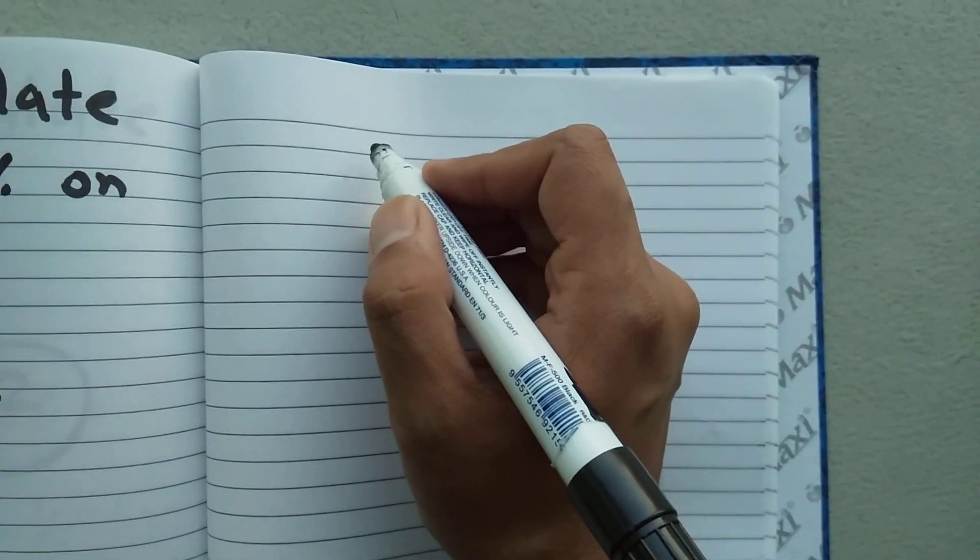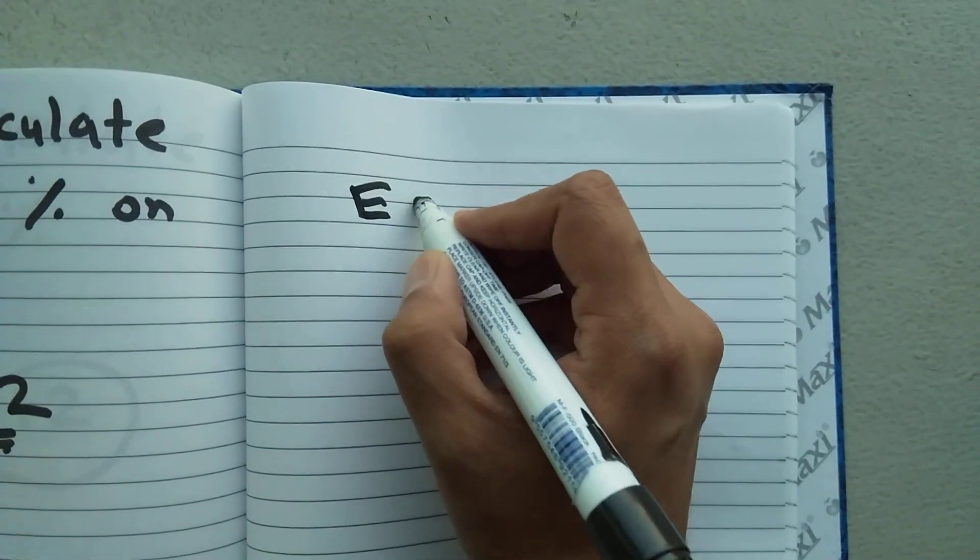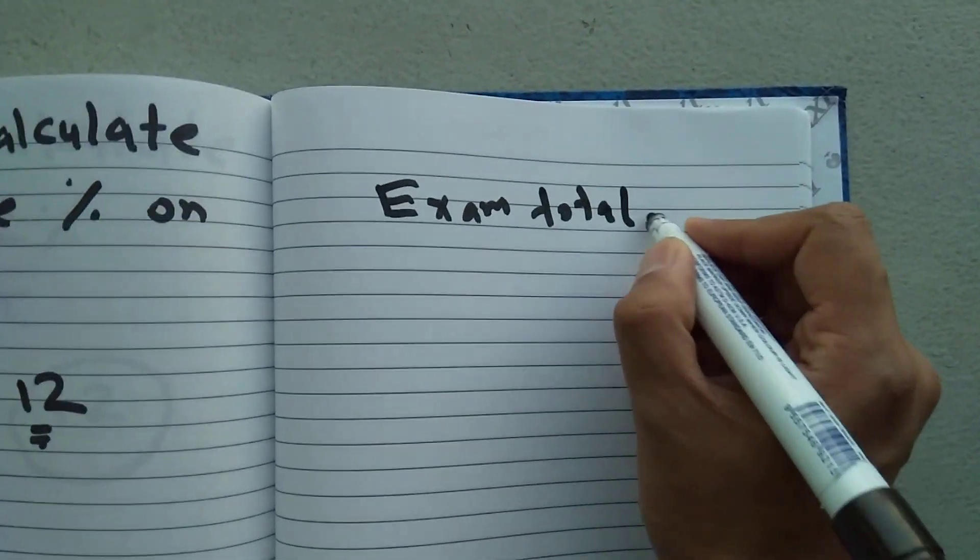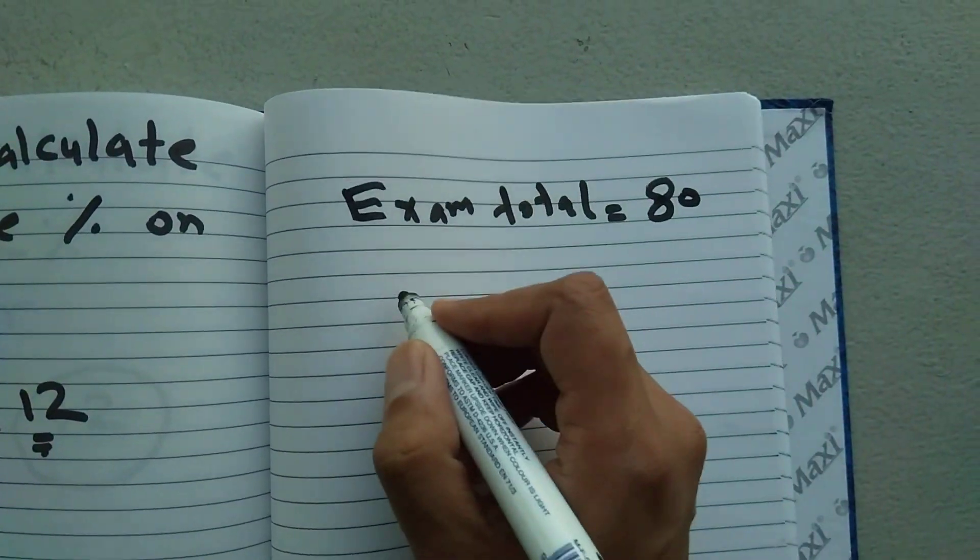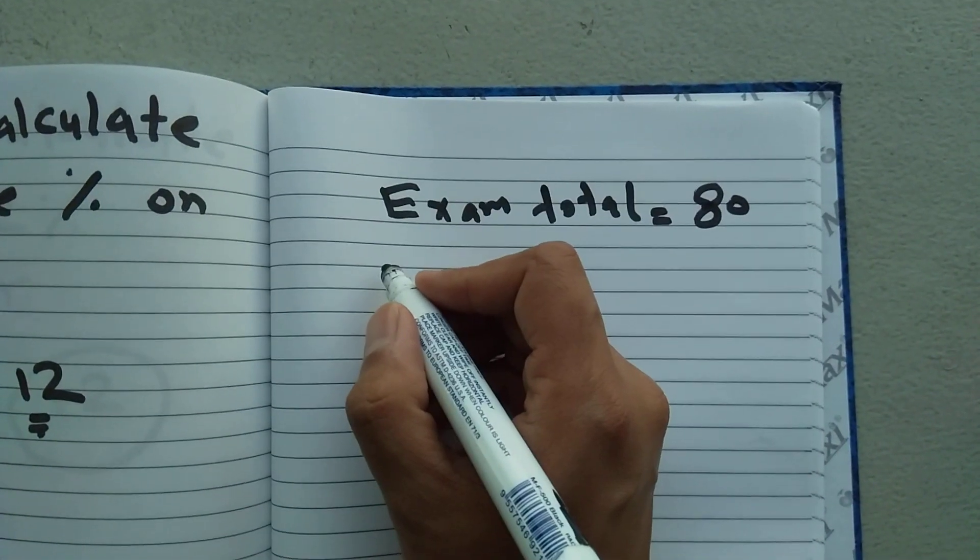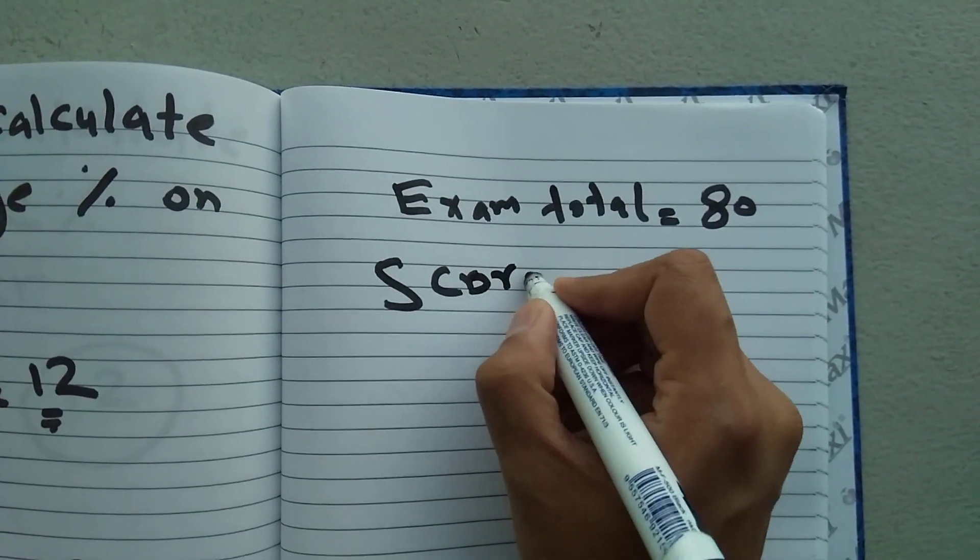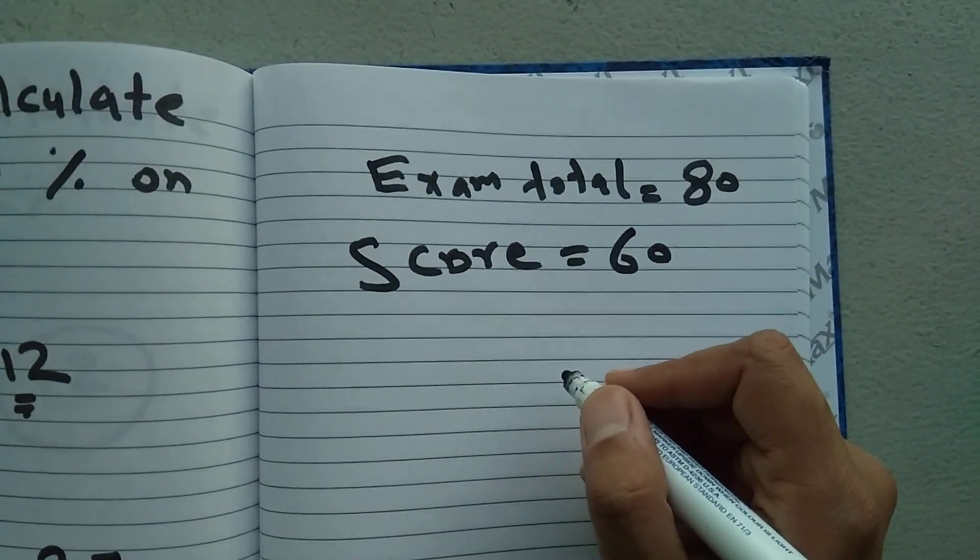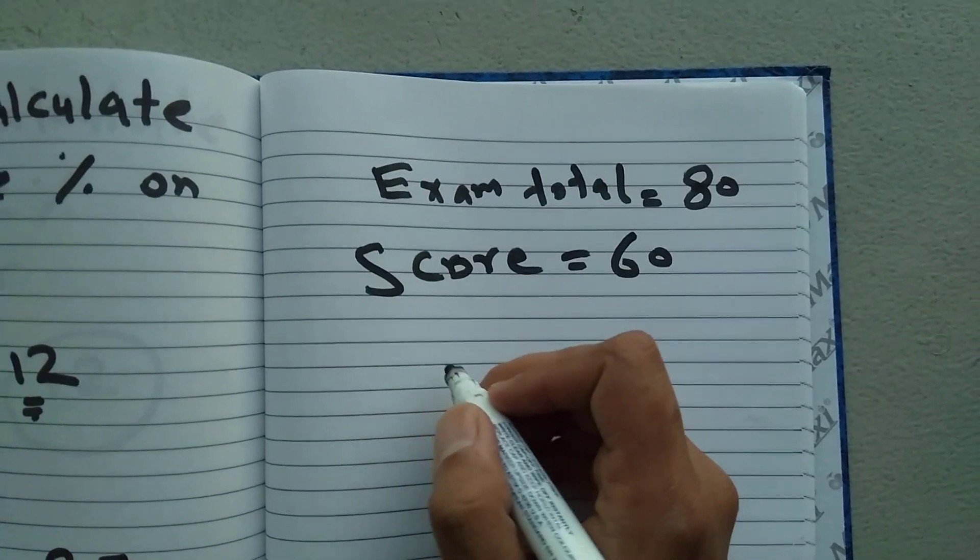For example, you have an exam and the total marks are, let's say, 80. And how much you score? Your score is, let's say, you score 60 out of 80. And now you want to calculate how much percentage you got in your exam.